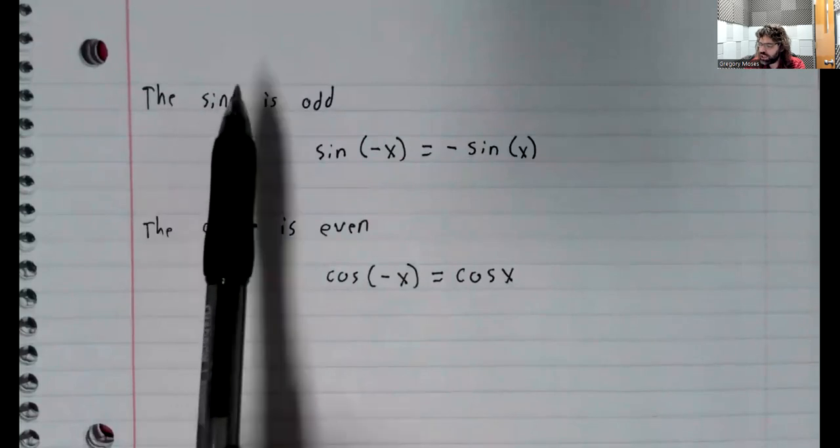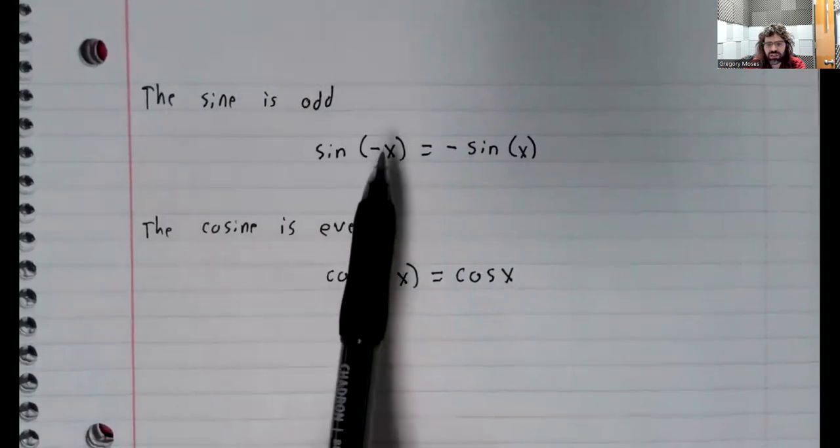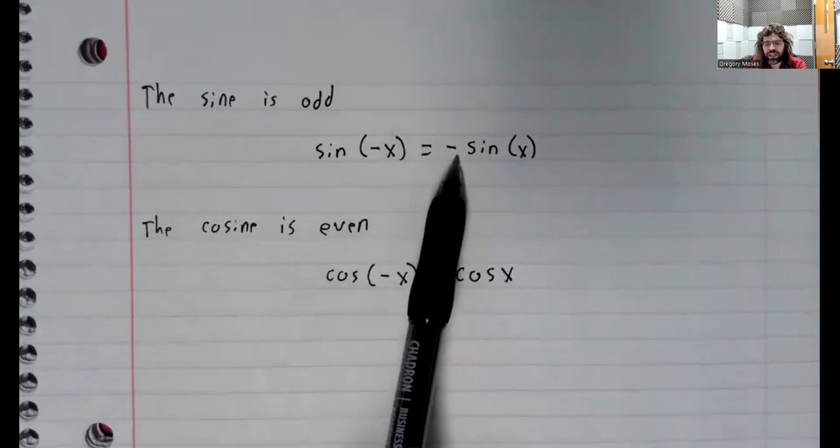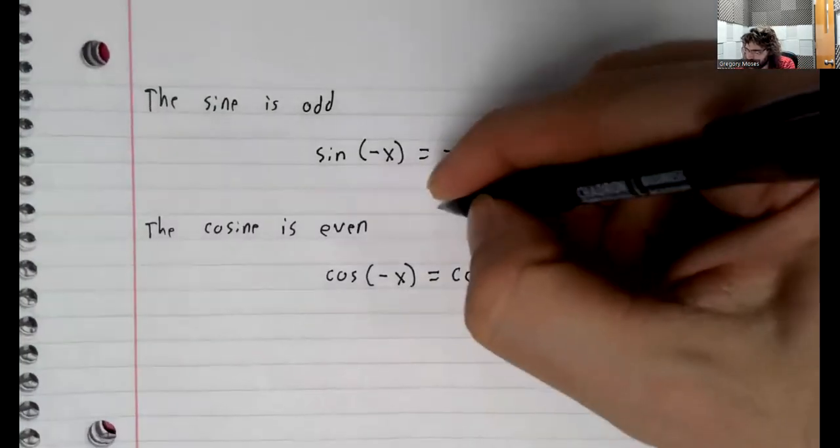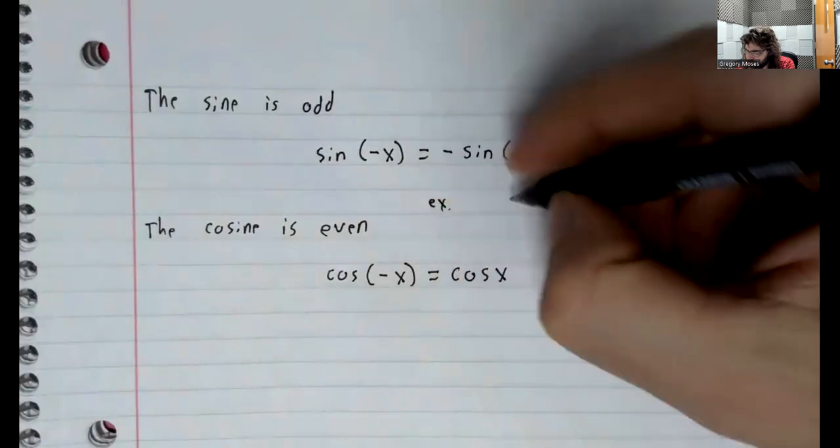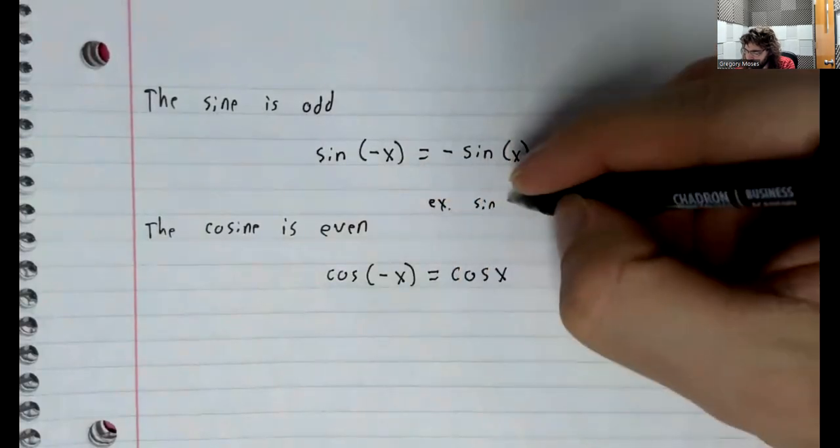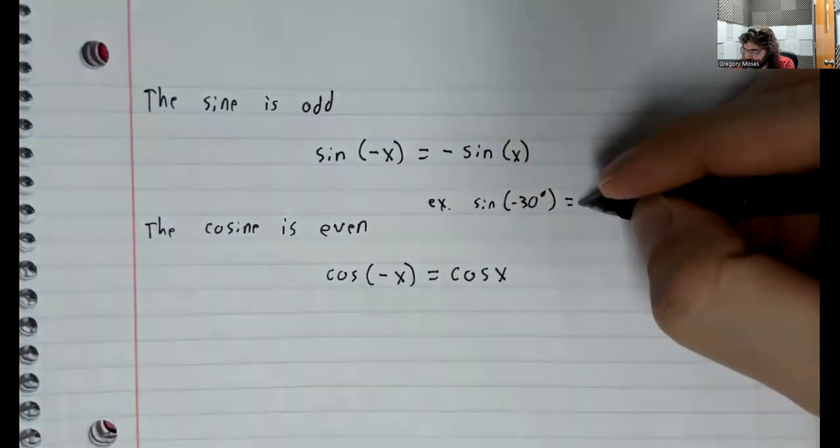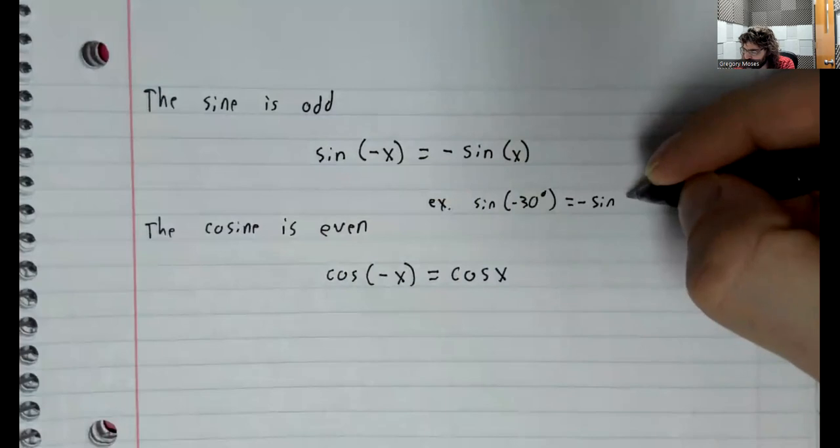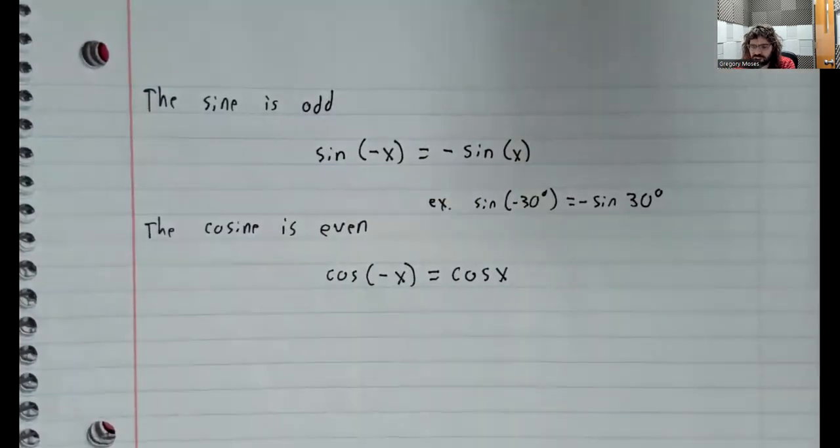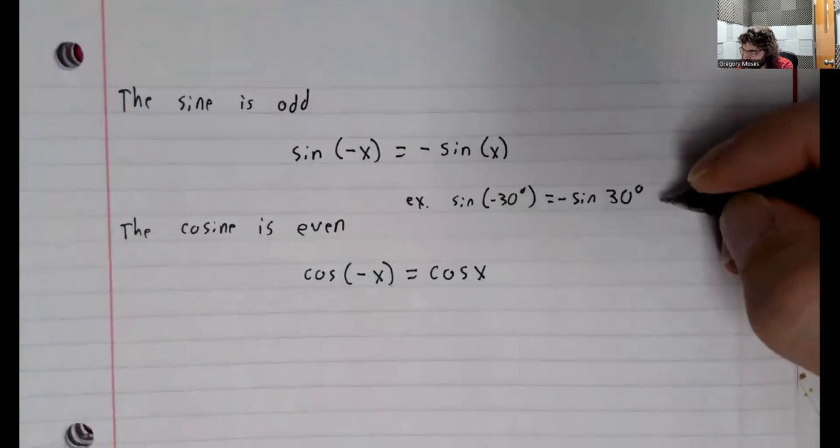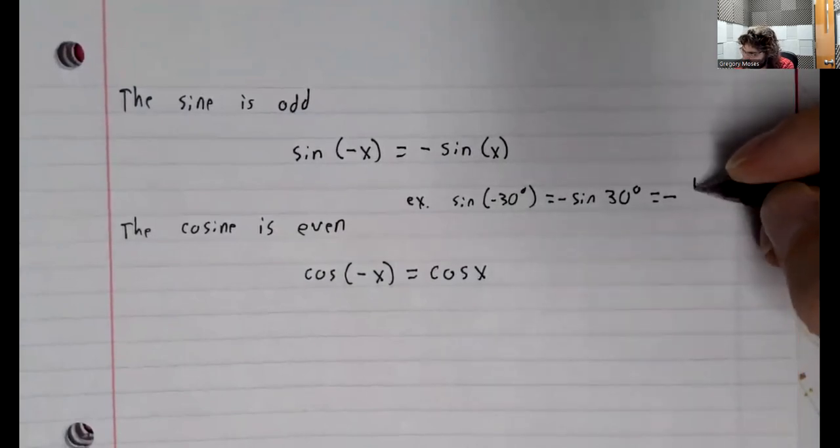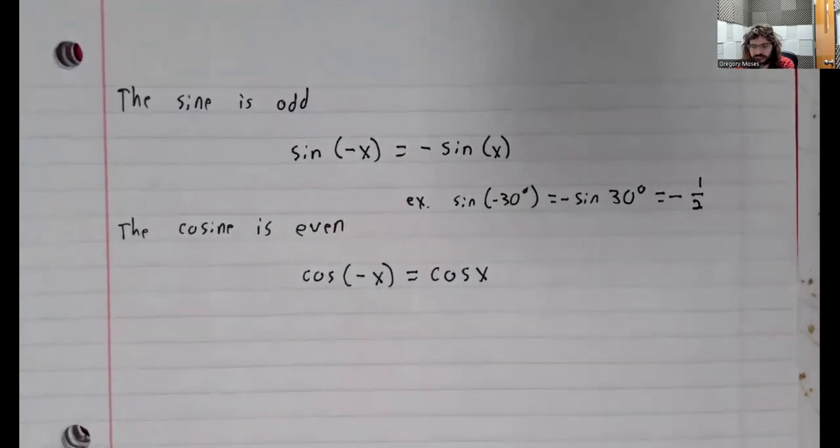The sine being odd means that the sine of negative x is negative the sine of x. So, for example, the sine of negative 30 degrees is negative the sine of positive 30 degrees, which is negative one-half.